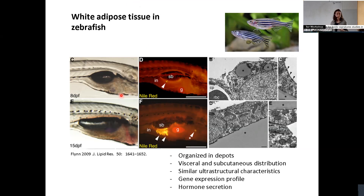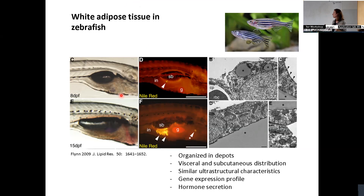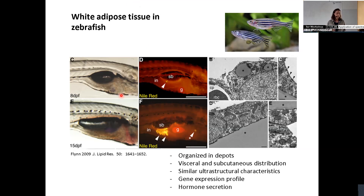White adipose tissue in zebrafish has almost the same characteristics as in mammals: it accumulates in several depots along the body, and also has similarities from the ultrastructural point of view and from the gene expression point of view.